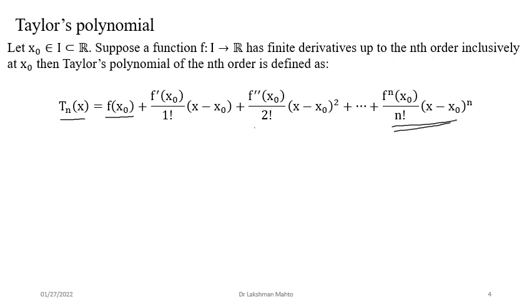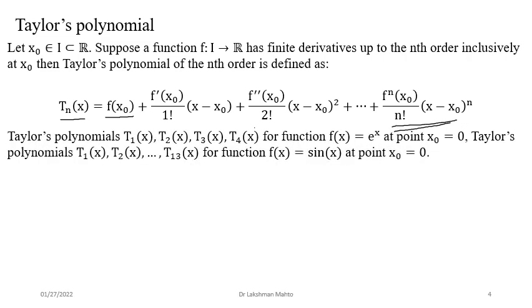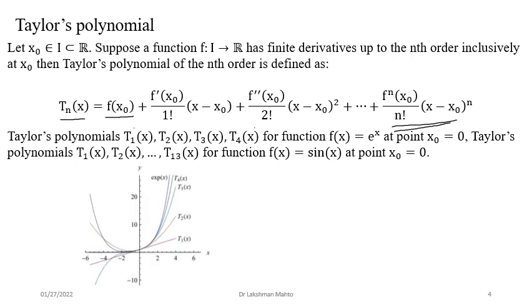Each function will have a different Taylor polynomial because the coefficients are determined by the various derivatives of the function at x₀. If you change the function, you get a different Taylor polynomial. As an example, let's look at the Taylor polynomial for the exponential function eˣ in the neighborhood of 0. We can see various degree polynomials: T₁ (degree 1, linear), T₂ (quadratic), T₃ (cubic), and so on.